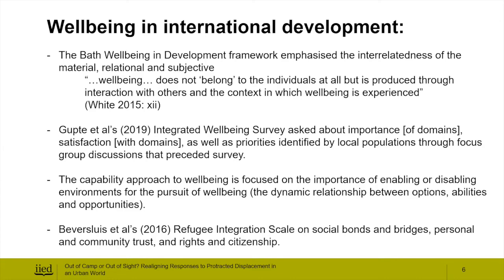Gupta et al.'s wellbeing survey provides insights into how to measure subjective wellbeing in relation to its other components. Their survey used focus groups to identify wellbeing priorities of local populations, then asked participants to identify the importance of these domains and their satisfaction with them. The capability approach calls attention to the conditions in which people aspire to wellbeing, examining enabling or disabling environments — the dynamic relationship between options, abilities, and opportunities. We also found the refugee integration scale very helpful for measuring relational aspects of wellbeing, such as social bonds and bridges, personal and community trust, and rights and citizenship.